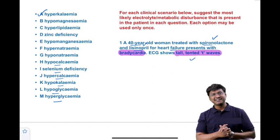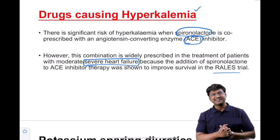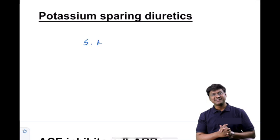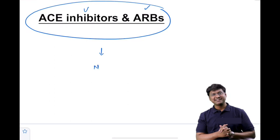You need to be aware of drugs that precipitate hyperkalemia. When you give a combination of ACE inhibitors and potassium-sparing diuretics, that will precipitate hyperkalemia. However, this combination is not completely contraindicated — it is useful in the treatment of severe heart failure, as proved by the RALES trial. ACE inhibitors and ARBs, however, should never be combined, as that carries a high risk of hyperkalemia.